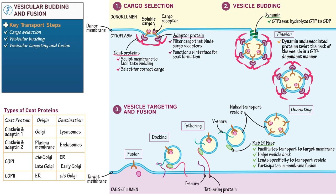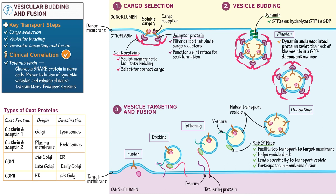As a clinical correlation, denote that the tetanus toxin, released by bacteria known as Clostridium tetani, cleaves a snare protein in nerve cells. This prevents the fusion of synaptic vesicles and, as a result, the release of neurotransmitters, which produces muscular spasming. This concludes our diagram.